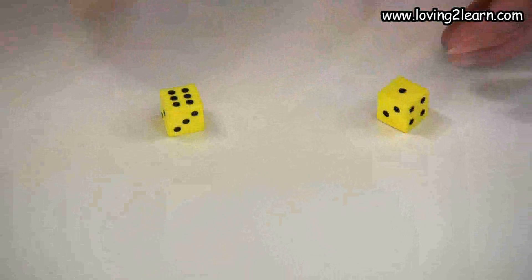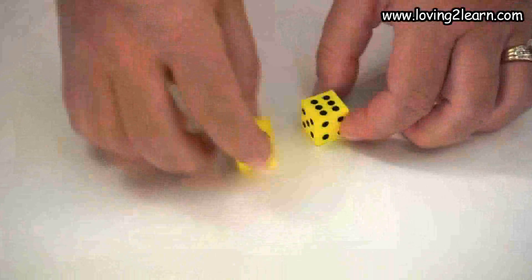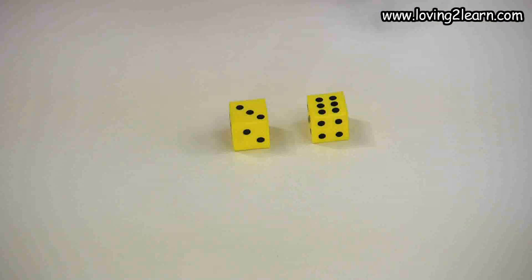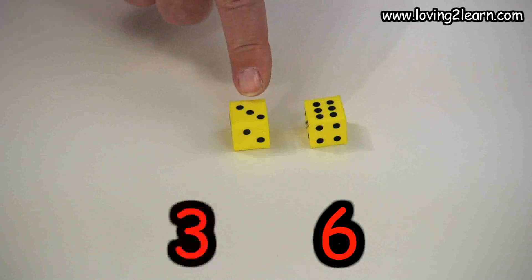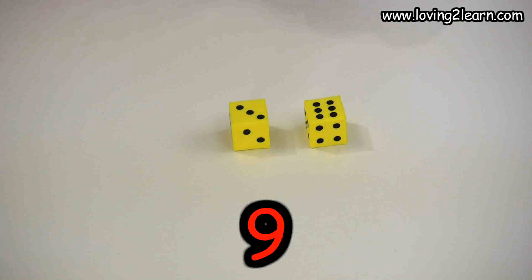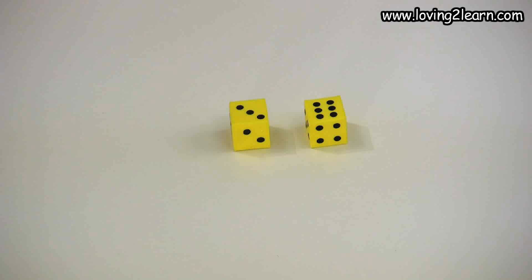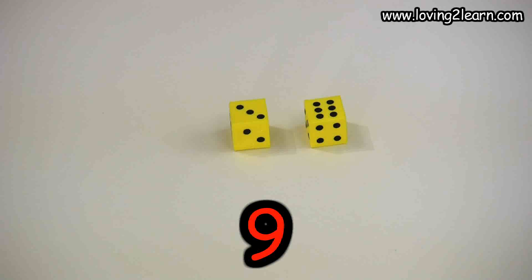Then we'll spin the dice again. I'm going to spin them again. And we come up with six and three, which is nine. Now we have to come up with combinations that equal nine.